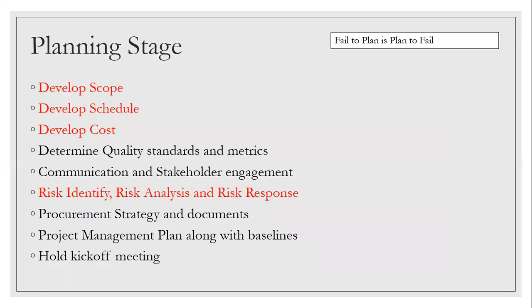Planning stage is the only stage where things go in a proper order. In execution or monitoring control, things might not be in an exact order, but planning must be in an exact order. A PM will give a lot of time to developing the planning, and the outcome is a formal project plan document signed off by all the key stakeholders.